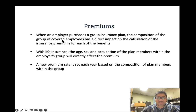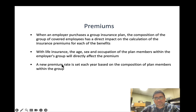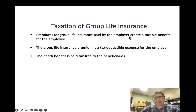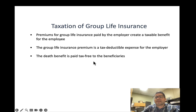When an employer purchases a group insurance plan, the composition of the group directly impacts the premium calculation. With group life insurance, the age, sex, and occupation of the plan members affect the premium, and a new premium rate is set each year based on the composition of the group. Premiums for group life insurance paid by the employer create a taxable benefit to the employee, and the premium is a tax-deductible expense for the employer.